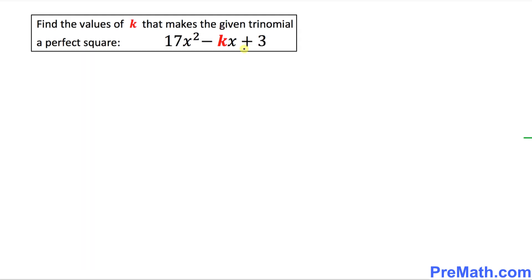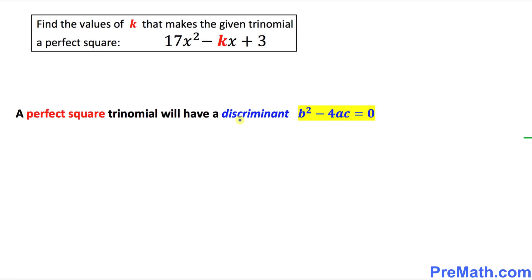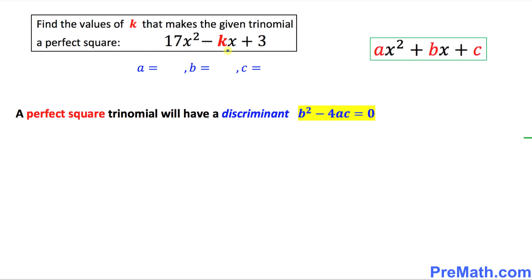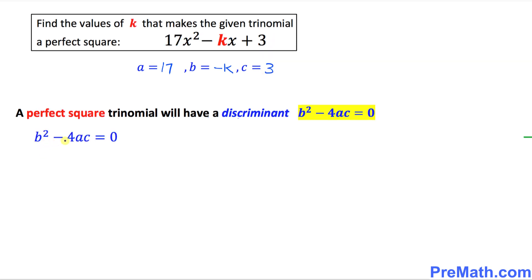Here is our next example. We want to find the value of k such that this trinomial becomes a perfect square. We know that a perfect square trinomial will always have a discriminant b squared minus 4ac equal to 0, so we must find the value of this discriminant. Comparing with the standard quadratic form, we find that a is 17, b equals negative k, and c equals positive 3.